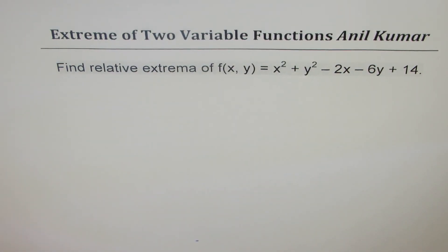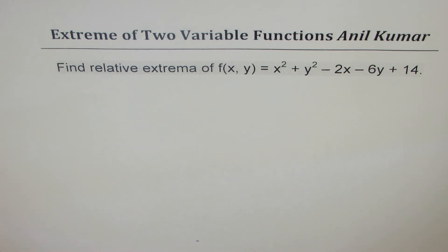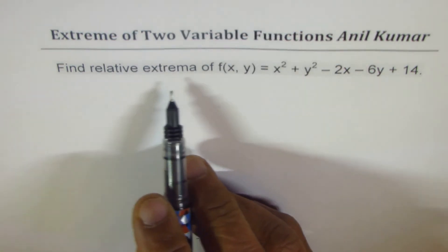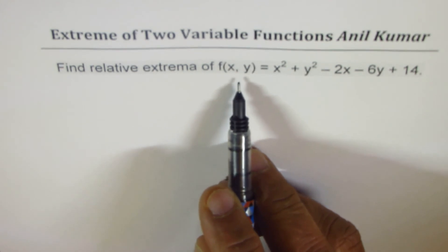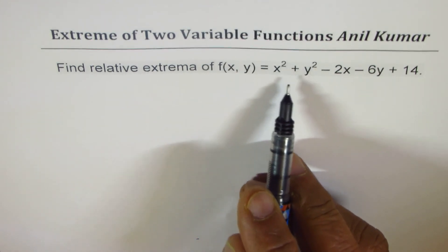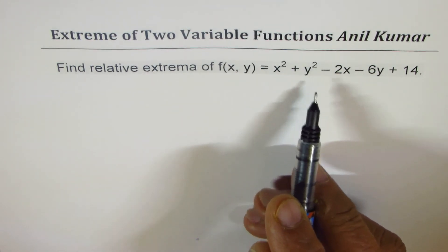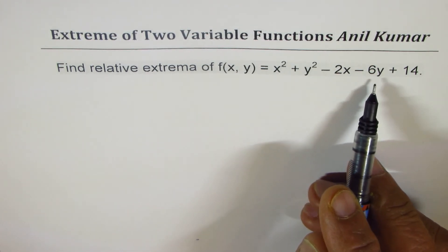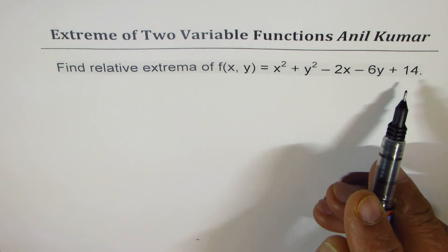I am Manil Kumar and in this video we will take up three examples to master how to find extrema of two-variable functions. The first question is: find relative extrema of f(x,y) = x² + y² - 2x - 6y + 14.